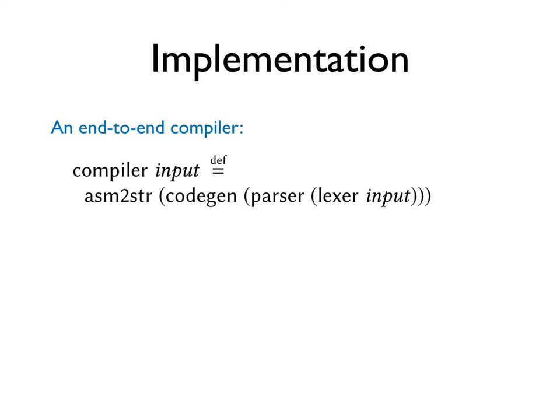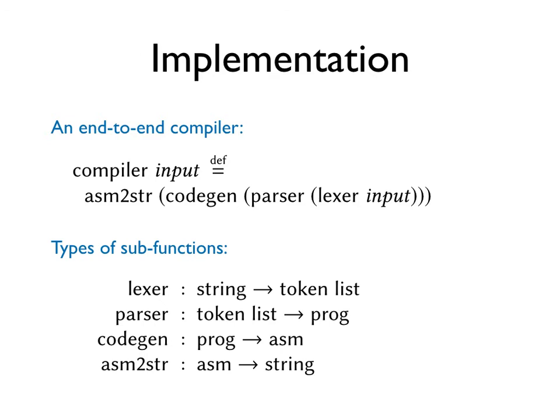Implementation. Here is the top-level function implementing an end-to-end compiler. The sub-functions are a lexer that turns a string into a list of tokens, a parser that turns a list of tokens into a source program, prog. Then we have a code generator which, given a source program, returns an assembly program. Finally, the asm-to-string function converts the assembly program into concrete syntax that an off-the-shelf assembler will understand.